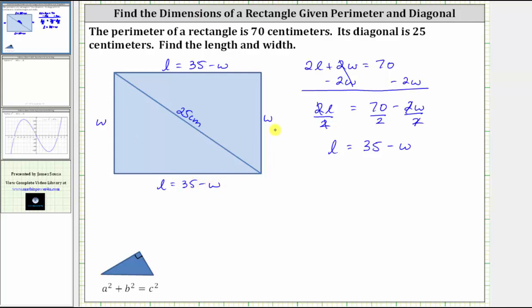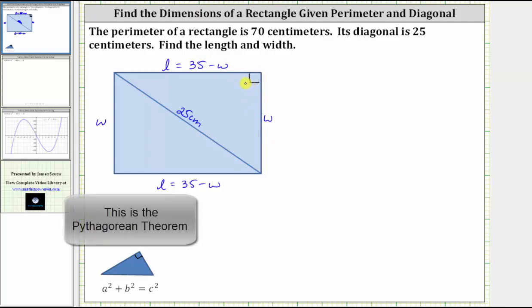Remember our goal here is to determine the length and the width of this rectangle. Well notice the diagonal cuts the rectangle into two right triangles. Let's focus on this upper right triangle here. We can set up an equation in terms of W now, using the fact that for a right triangle, A squared plus B squared equals C squared, where A and B are the lengths of the legs, and C is the length of the hypotenuse.